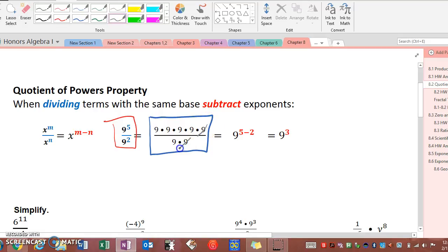9 divided by 9 is 1, 9 divided by 9 is 1, and 1 times anything is itself. So when we see what we have left over in our numerator, we have 9 times 9 times 9 which is the same as 9 to the third.